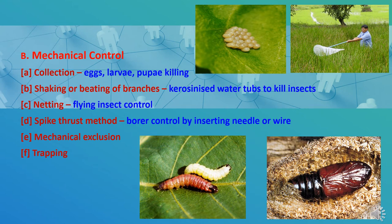Now, mechanical control methods. Different types of mechanical devices have been used successfully for catching and killing insect pests. First is collection, where eggs, larvae, and pupae are collected and killed. Second is shaking or beating of branches — a tub containing kerosene oil is kept under the infected plant, then branches are shaken or beaten with a stick. Insects fallen into the tub are killed by the kerosene water. Third is netting, where flying insects are collected with a net and then killed.